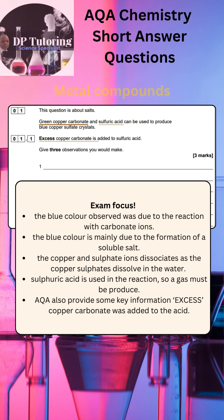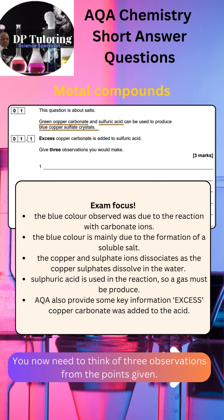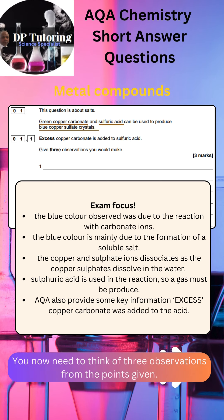The first part of the question provided you with some information. Green copper carbonate and sulfuric acid can be used to produce blue copper sulfate crystals. You were also informed that excess copper carbonate was added to the sulfuric acid.